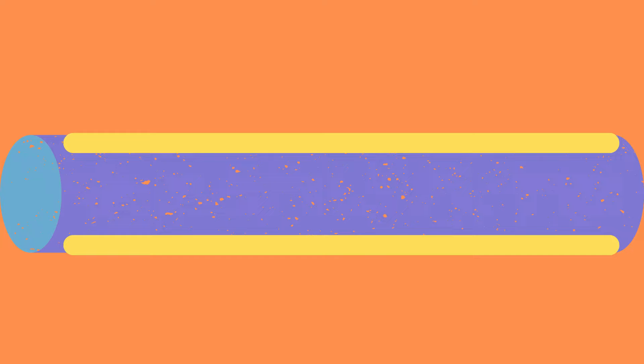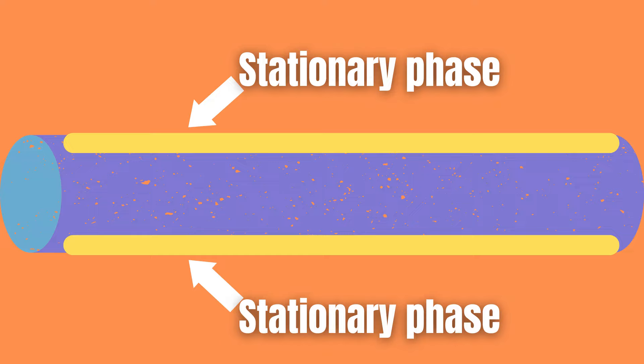The only thing you need to know about how chromatographies work is that they all separate compounds based on how these compounds interact with the stationary phase inside the column of the chromatography.